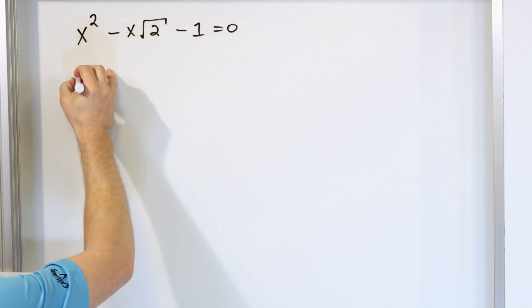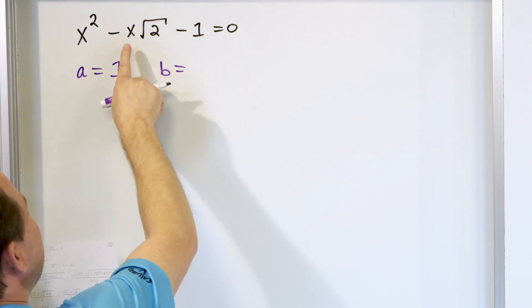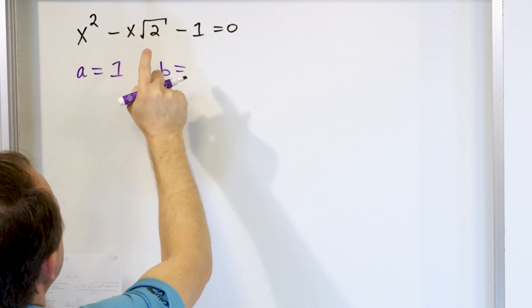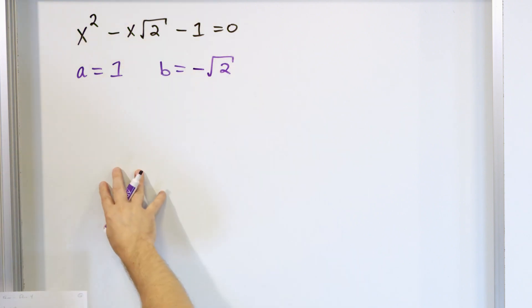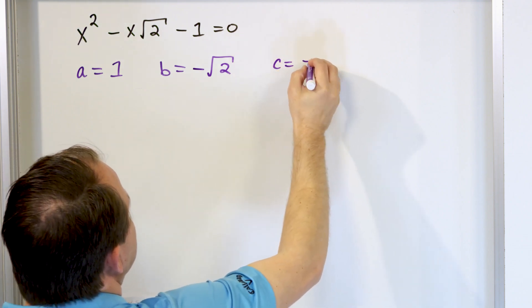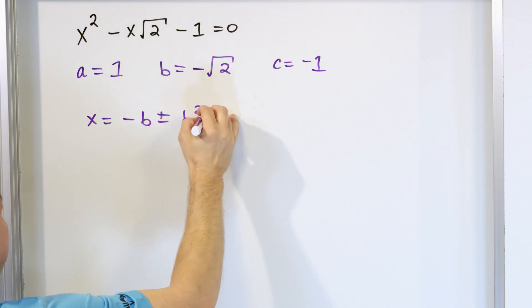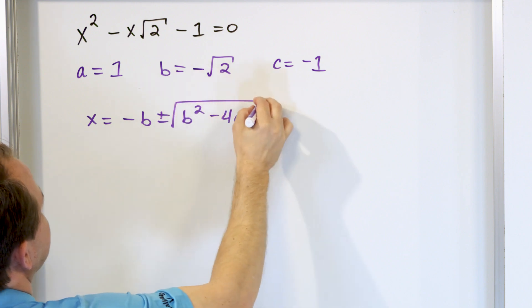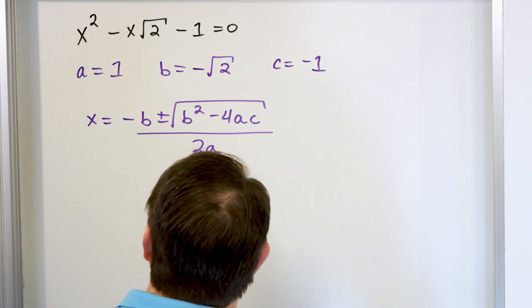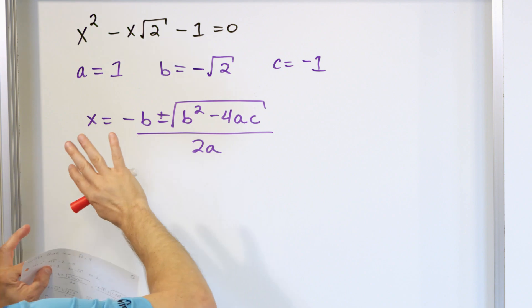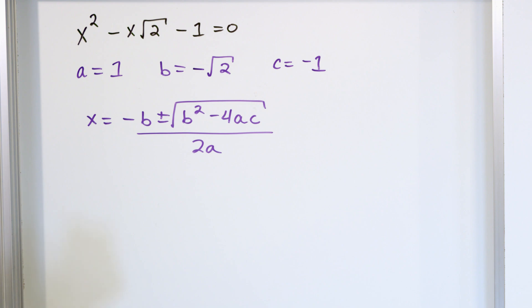So a is just like it always is — whatever's in front of x squared. B is whatever's in front of the x, but the way it's written you have a negative 1 and then a square root of 2, so b is everything in that term other than the x: negative square root of 2. That's what b actually is. And c is equal to negative 1. Then we write down the quadratic formula: negative b plus or minus the square root of b squared minus 4ac, all divided by 2a. When you have radicals you have to write everything down carefully and do the squaring properly — you have to be a little more careful than usual.